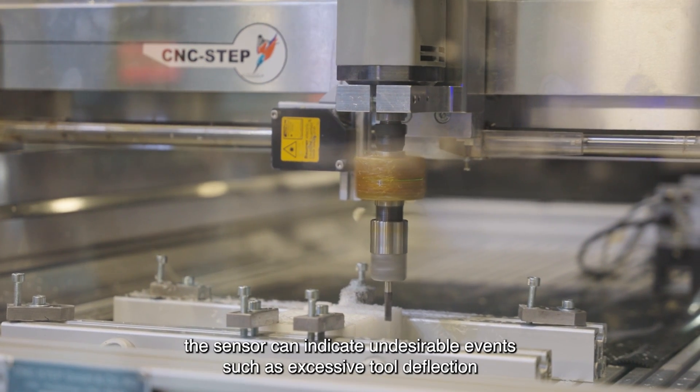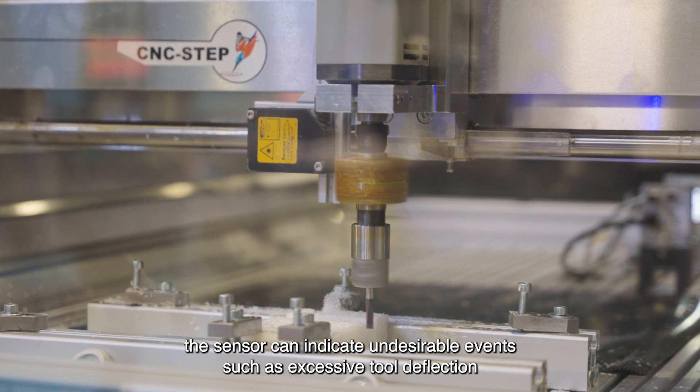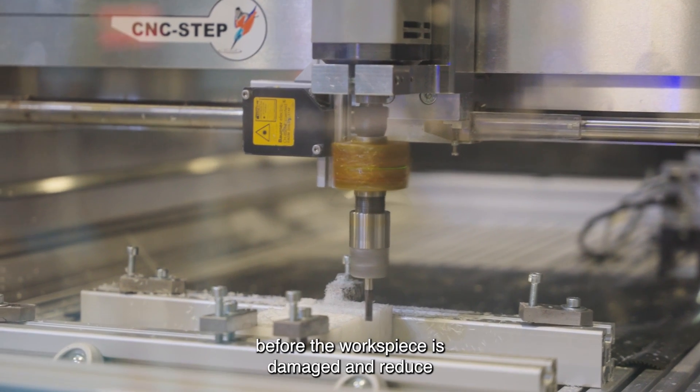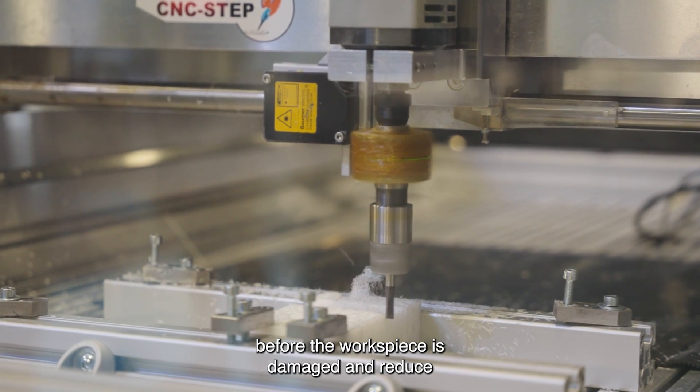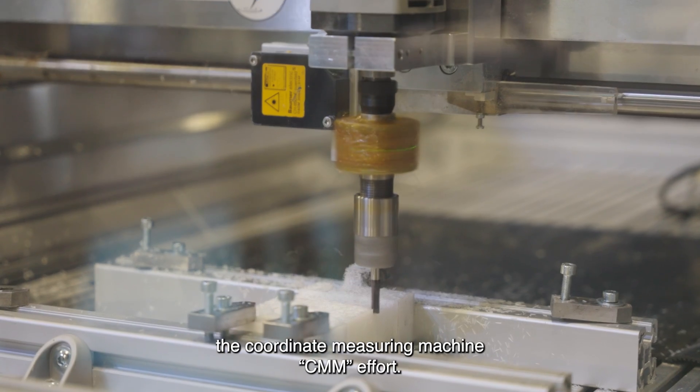the sensor can indicate undesirable events such as excessive tool deflection before the workpiece is damaged and reduce the coordinate measuring machine effort.